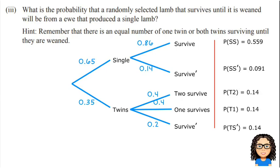The question talks about the probability that a randomly selected lamb survives until it is weaned. So what's the chance that a randomly selected lamb that survives will be from a ewe that produced a single lamb?